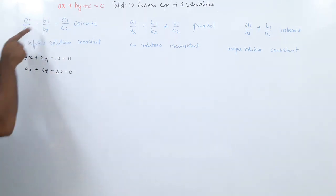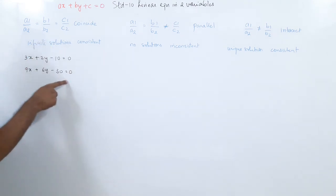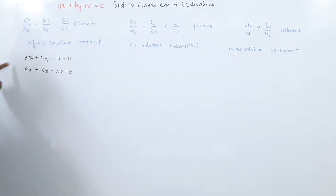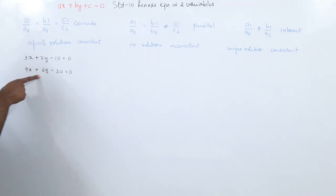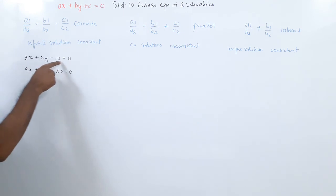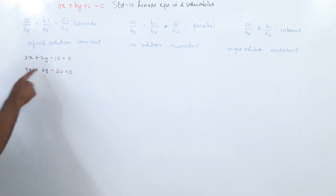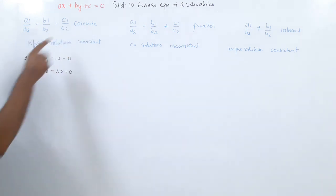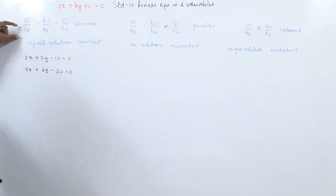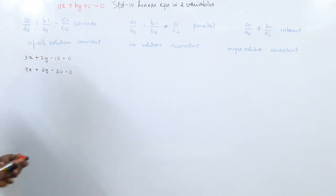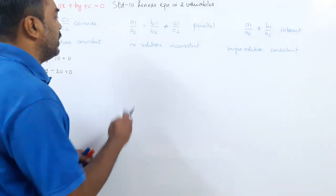So a2 = 9, b2 = 6, c2 = −30. Now a1/a2 = 3/9 = 1/3, b1/b2 = 2/6 = 1/3, and c1/c2 = −10/−30 = 1/3. So a1/a2 = b1/b2 = c1/c2, which means the lines coincide and there are infinite solutions — this is condition 1.